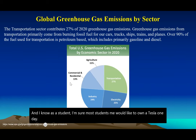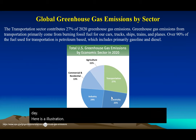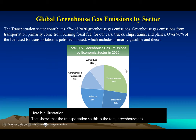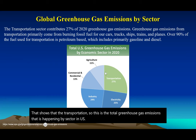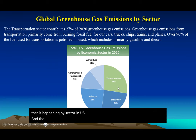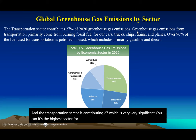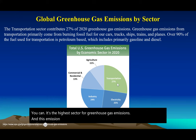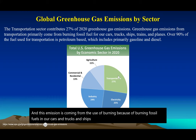Here is an illustration showing total greenhouse gas emissions by sector in the US. The transportation sector is contributing 27%, which is very significant — you can see it's the highest sector for greenhouse gas emissions. This emission comes from burning fossil fuels in our cars, trucks, ships, and trains — all modes of transportation.